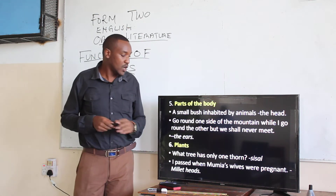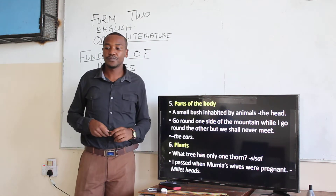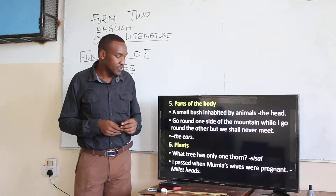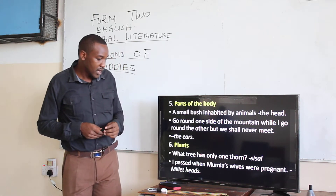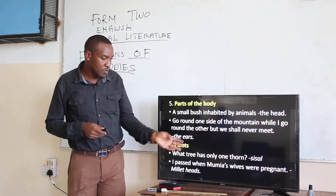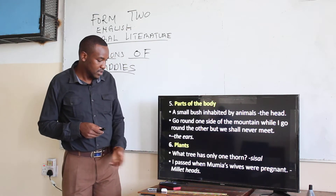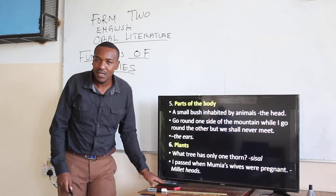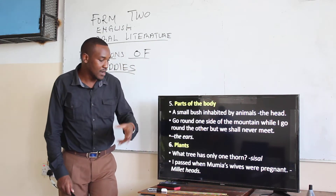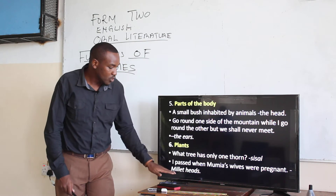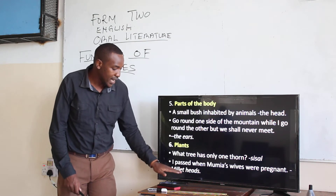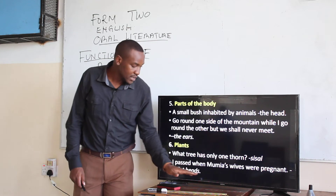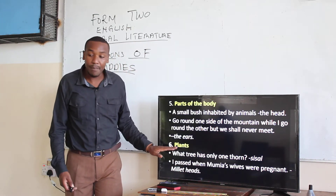Then we have riddles about plants. 'What tree has only one thorn?' — the answer is a scissor. And: 'I passed when Mumia's wife was pregnant' — the answer can be millet heads. We have the sorghum and the millet, so millet for her head. 'I passed when Mumia's wife was pregnant' — that is a riddle on plants.